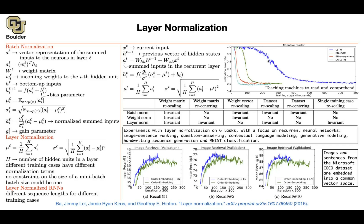For reading comprehension: an LSTM without any normalization takes a certain amount of training time and gives a certain validation error. Adding batch norm improves it; adding batch norm everywhere — including fully connected layers — gives further improvement. But layer normalization, applied only to the LSTMs, gives the best result.